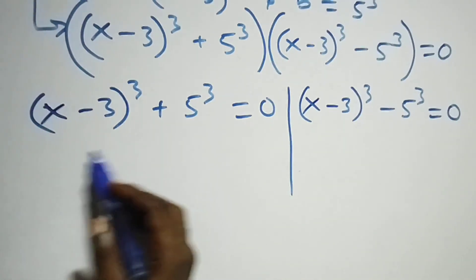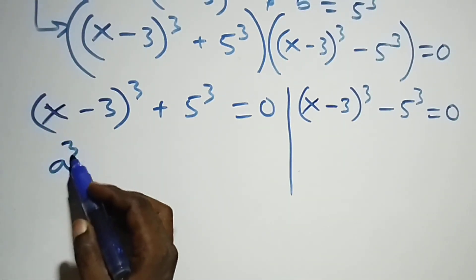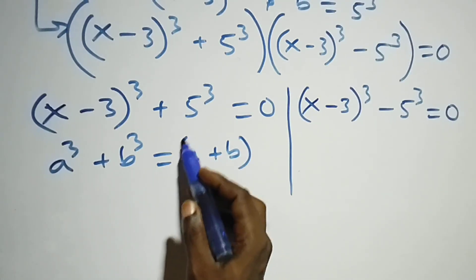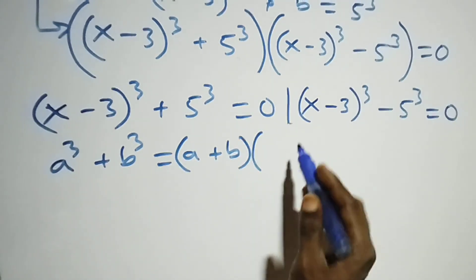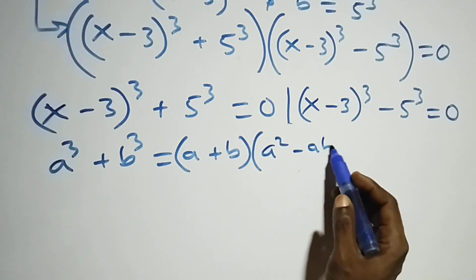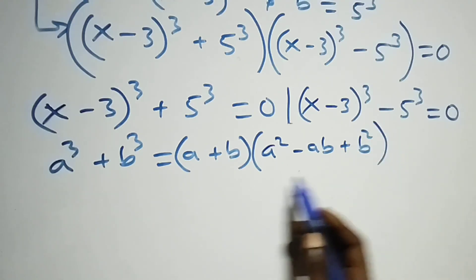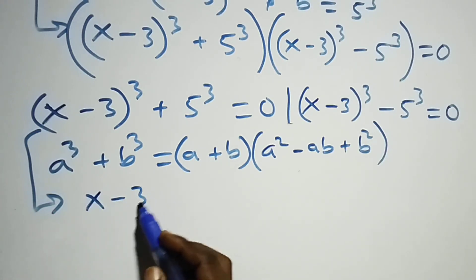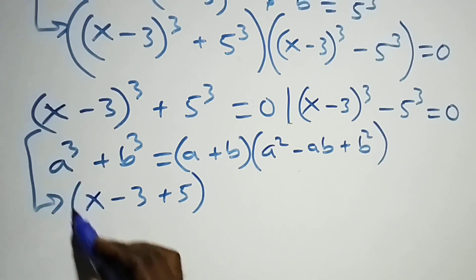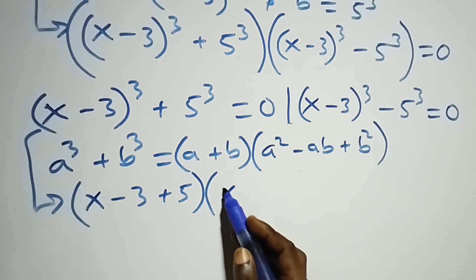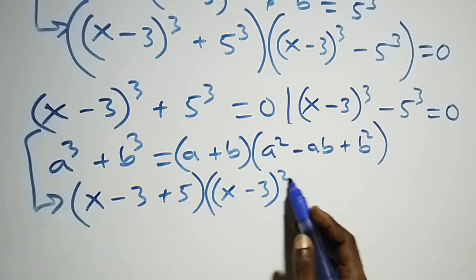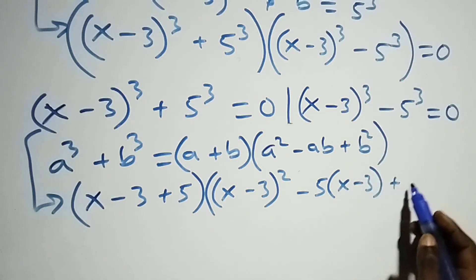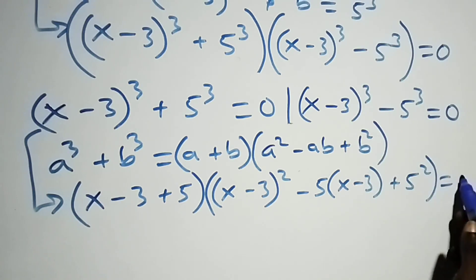Solving from the first case, this follows the identity a³ plus b³, which equals (a plus b) into (a squared minus ab plus b squared). So this becomes: (x minus 3 plus 5) into brackets, times (x minus 3) squared, minus 5 times (x minus 3), plus 5 squared, close bracket, equals to zero.